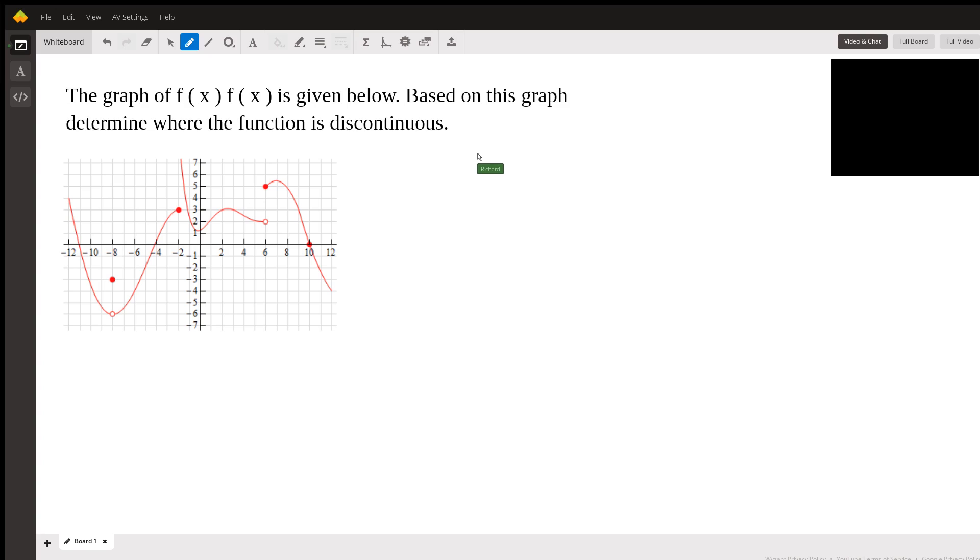The limit as x approaches negative eight exists. It's negative six. However, at this first point it's not continuous because the limit as x approaches negative eight is equal to negative six, which is not equal to f of negative eight.